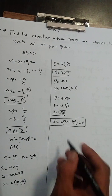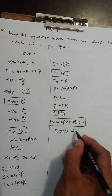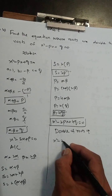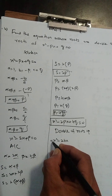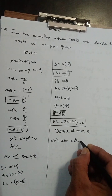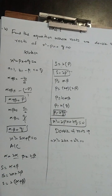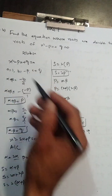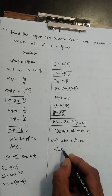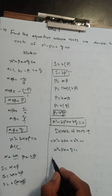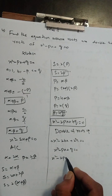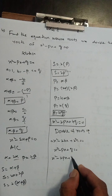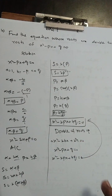Iska ek shortcut tariqa bhi hai. Double of roots ka formula hai: x² - 2bx + (2²)c = 0, yani middle term ko 2 se multiply karna hoga aur last term ko 2² = 4 se multiply karna hoga. Hamare sawaal mein x² - px + q = 0 hai, to: middle term p ko 2 se multiply karein = 2px, aur last term q ko 4 se = 4q. So answer: x² - 2px + 4q = 0.